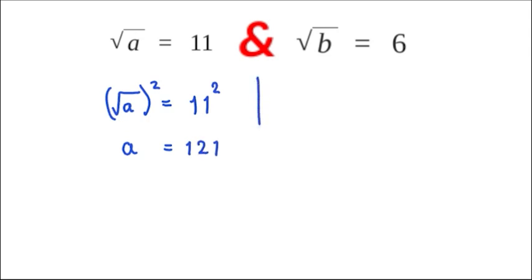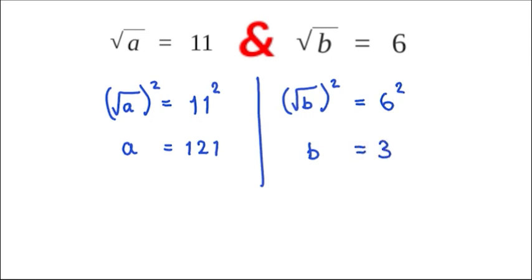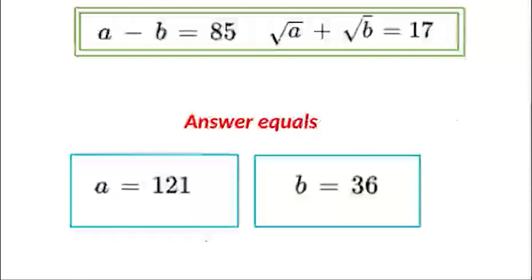On the right-hand side, the square root of b, all squared, is equal to 6 squared, and 6 squared is 36. So the answers are a is equal to 121 and b is equal to 36. I hope you enjoyed watching the video — please give a thumbs up and subscribe. Thanks a lot for watching, and see you again soon for the next video.